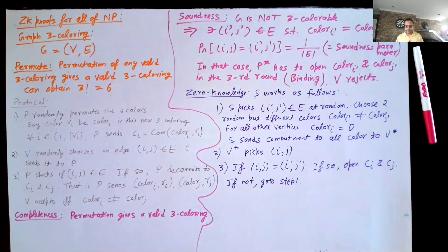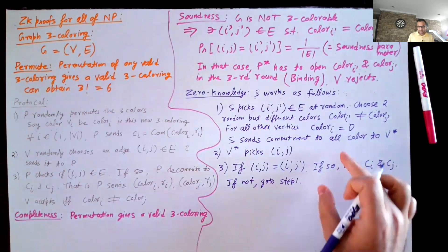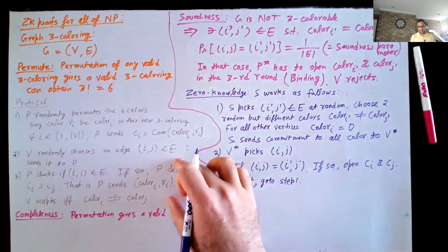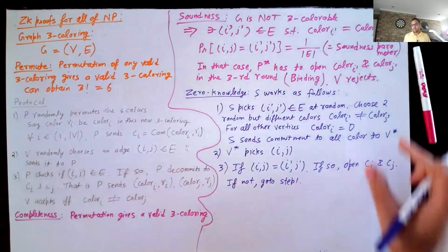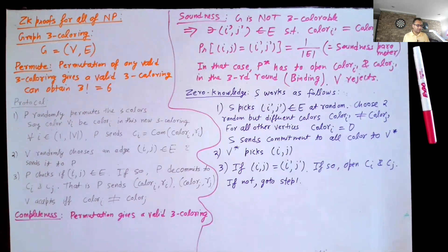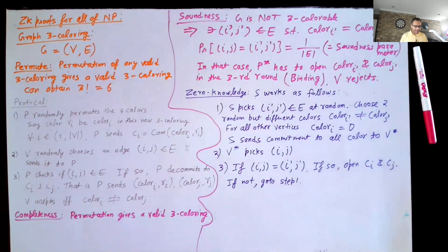Intuitively, if the simulator succeeds, what does V* see in this entire protocol? In the third round, V* sees the opening of two commitments with two different random colors — which is also the case in the real protocol. In the first round, V* sees a bunch of other commitments that all have zero inside, which is different from the real protocol. But from the hiding property of the commitment scheme, V* cannot distinguish a commitment to zero from a commitment to a valid color, since these commitments are never opened.